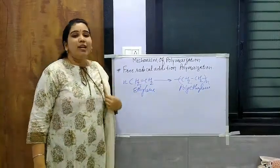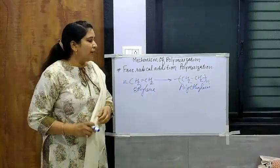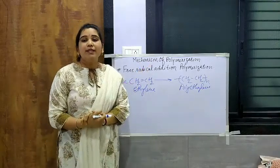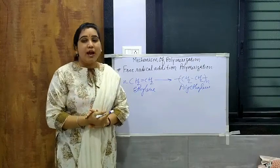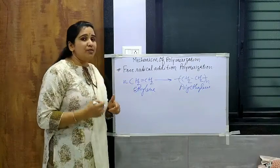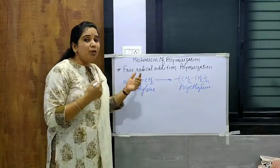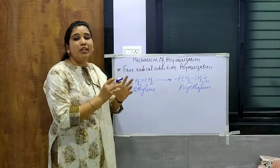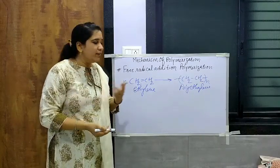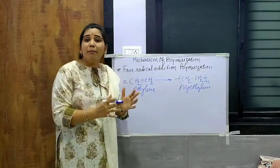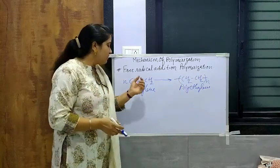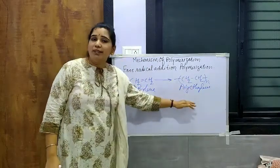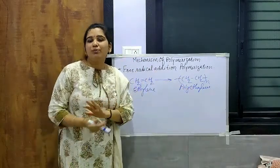Hello students. Now we have to see the topic of mechanism of polymerization, particularly addition polymerization. Addition polymerization involves monomers — molecules which form the polymer. For example, a single ethylene molecule, when a number of ethylene molecules are added together, there is formation of polyethylene. So it is called addition polymerization.